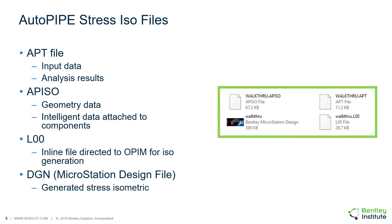The input data and stress analysis results from Autopipe are exported in an APT file. Autopipe reads the geometry data from the AP ISO file and stress data from the APT file. The AP ISO file contains intelligent data attached to components as well. This intelligent data is reported in the context of the drawing if selected, and an inline file, the .LOO file, is generated from the AP ISO and APT files, which is directed to the OPIM ISO extractor for generating the isometrics. These files are provided for information purposes and modifying them is not supported.